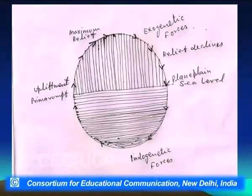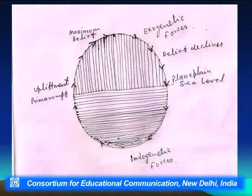The duration of the cycle depends on how long the endogenic process continues. If endogenic forces continue longer, the cycle will be much longer. If endogenic force action stops early, then the cycle will be short-term. At the end, the surface reaches sea level — that is the Penny Plane or End Rumpf. You can see the planation surfaces formed at this stage.